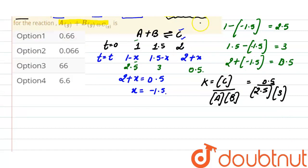After solving, the equilibrium constant will be 0.066, and the correct option here is option 2.